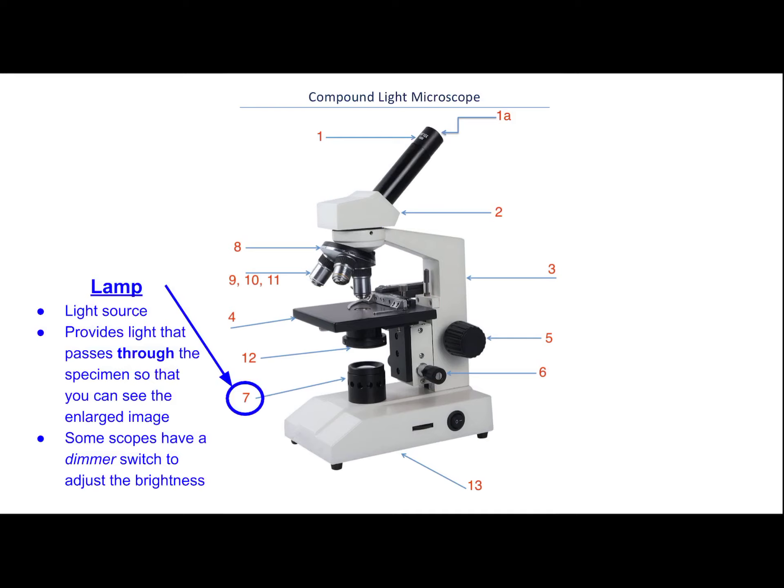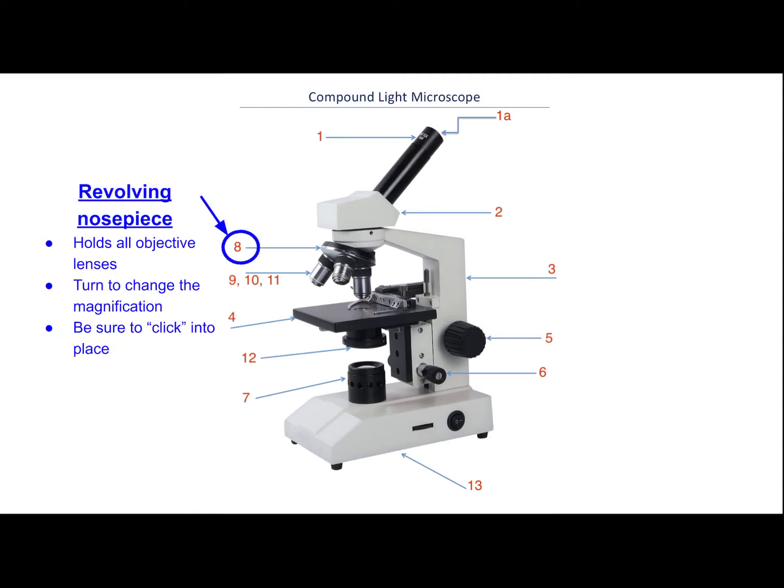Part number seven is the lamp, or light source. This is placed under the specimen and will provide light that passes through the specimen and into the lenses. A compound light microscope uses light to enlarge an image as it passes through the lenses. Some scopes have a dimmer switch — ours do — so you can adjust the brightness of the light passing through the specimen.